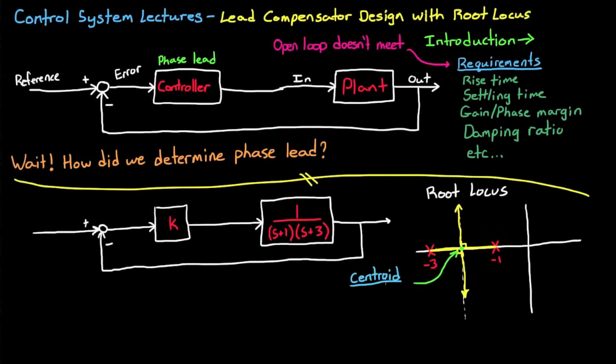And the location of where the asymptote crosses the real line is at a point called the center of gravity, or the centroid, which is simply the sum of the locations of the finite poles, minus the sum of the locations of the finite zeros, divided by the number of poles minus the number of zeros. And in our case, we have two poles and no zeros, so the center of gravity, or the centroid, is directly between the two of them at minus 2.